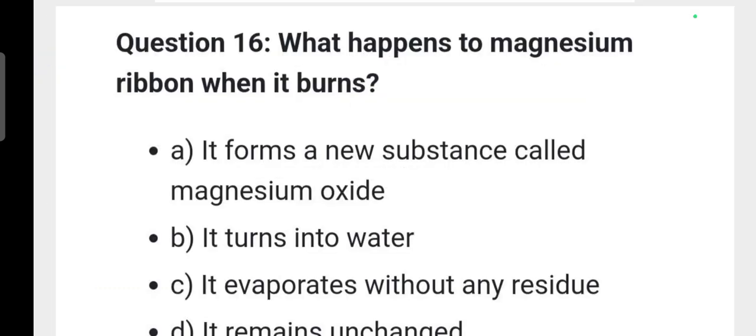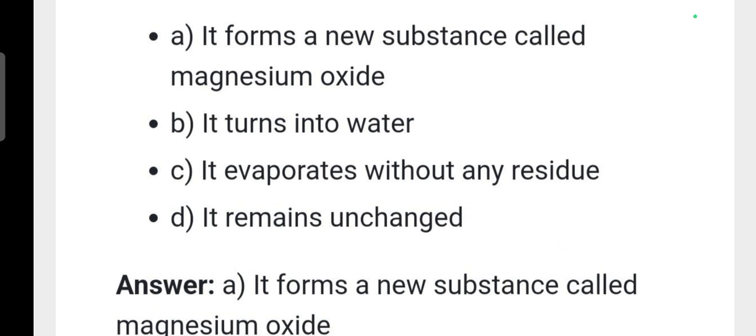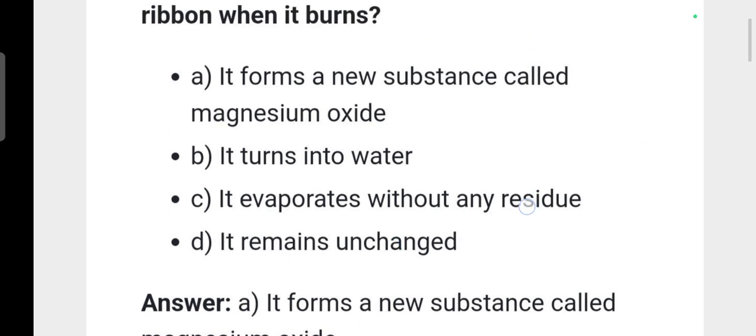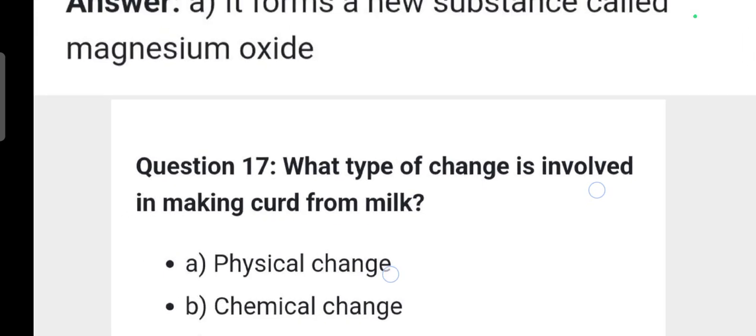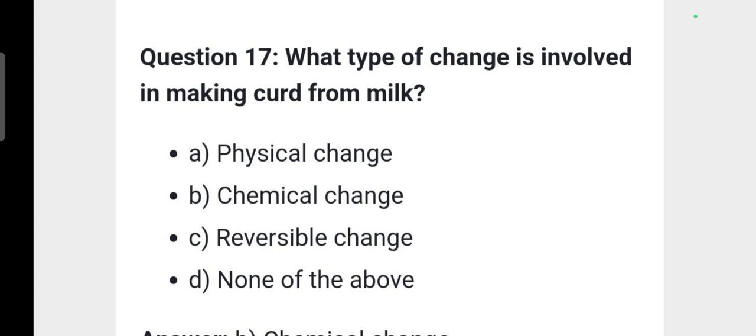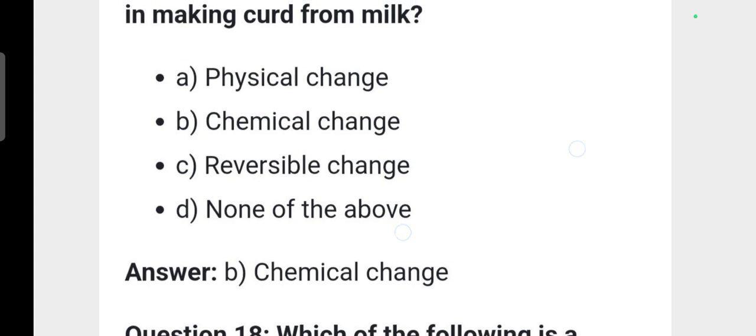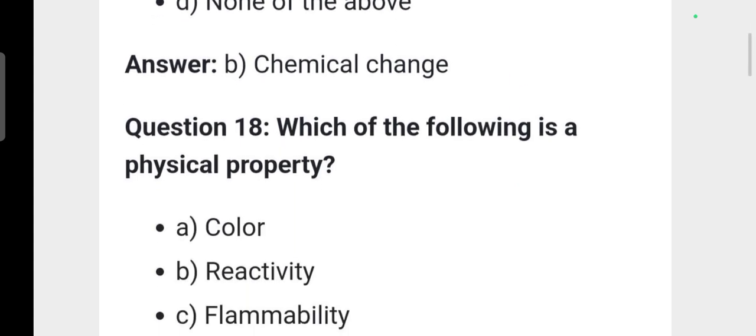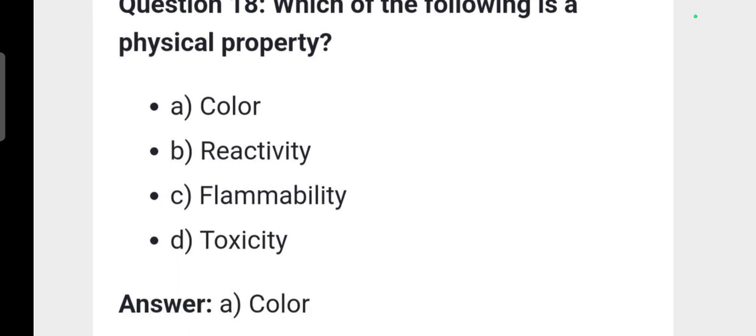First question: What happens to magnesium ribbon when it burns? Option A, it forms a new substance called magnesium oxide, this is correct. Next question: What type of change is involved in making curd from milk? This is chemical change and irreversible. Option B is correct. Next question: Which of the following is a physical property? Shape, size, color are physical properties. Therefore option A, color, is correct.